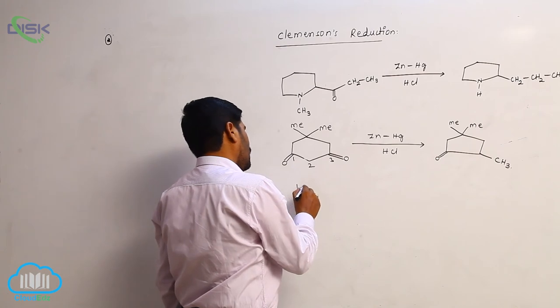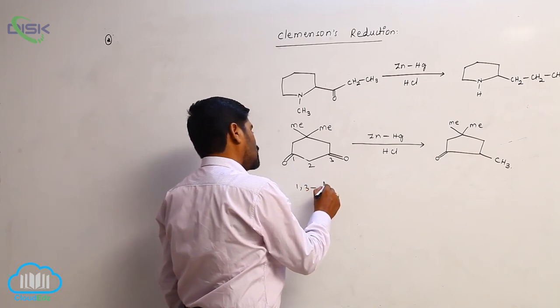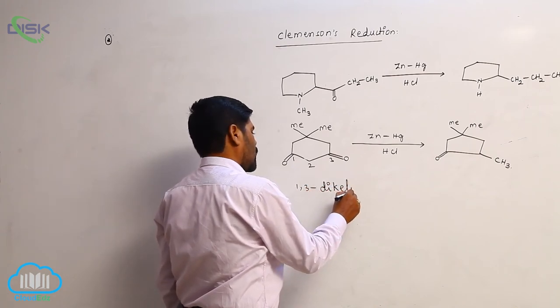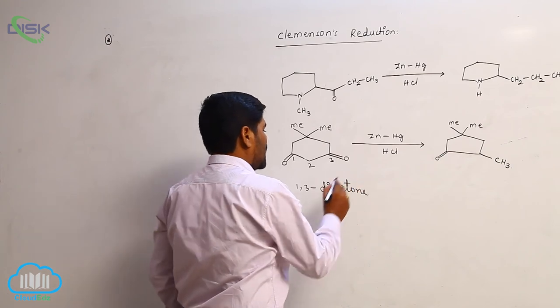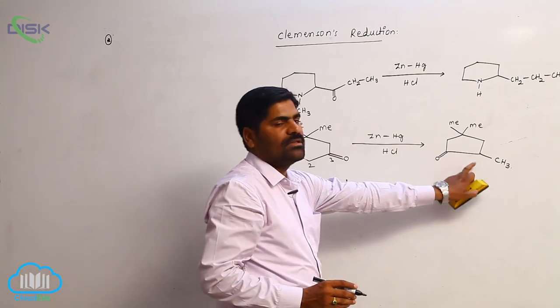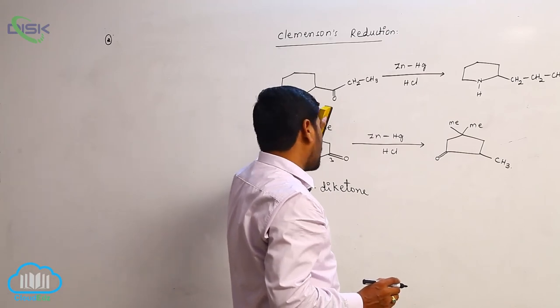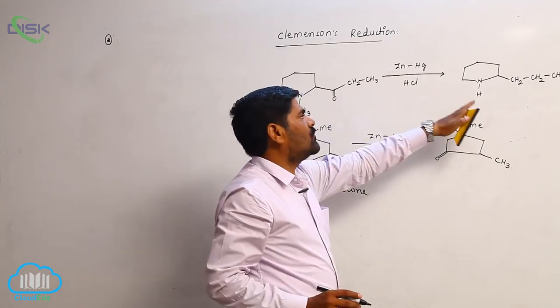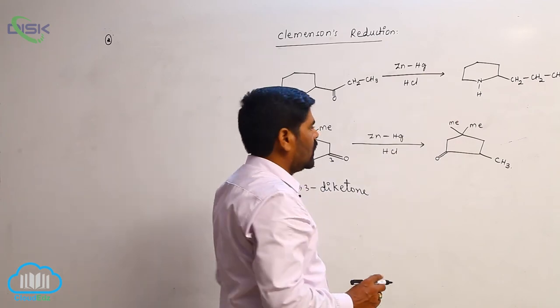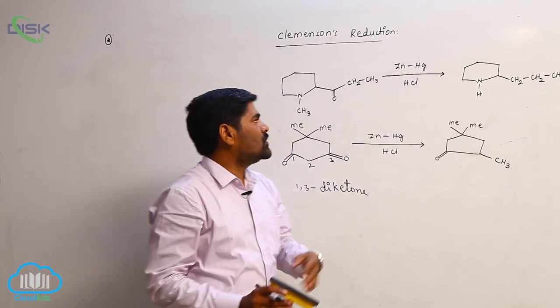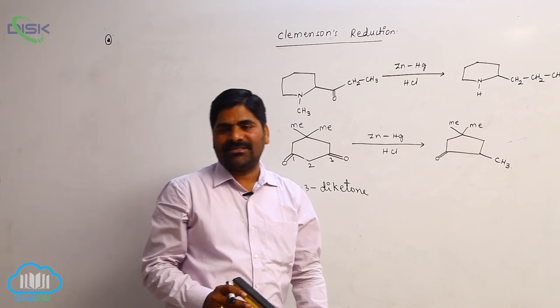Now 1,3-diketone. This 1,3-diketone converts into this product. This is piperidine, the piperidine derivative. It converts like this. So this is about Clemmensen reduction.